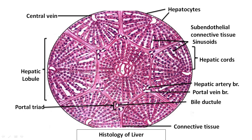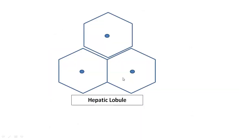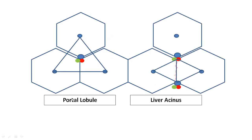The portal triad includes the hepatic artery which gives oxygenated blood, the portal vein which carries carbohydrates, proteins, and lipids from the gut, and the bile ductule which drains bile from the liver. This is the anatomical or structural unit of the liver called the hepatic lobule — what is visible to the eye anatomically is the hepatic lobule.